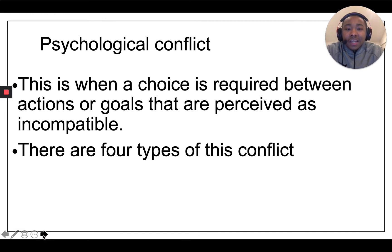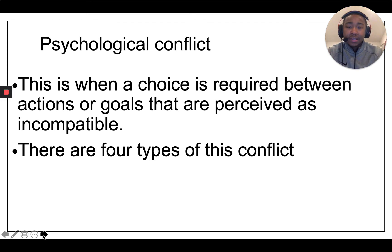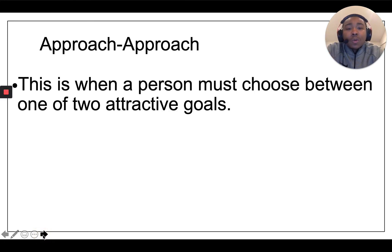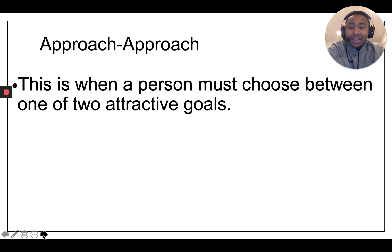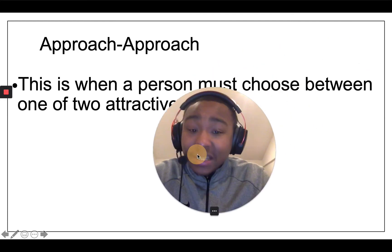We also have these psychological conflicts — I think this is really interesting. This is when there's a choice required between two different things or multiple things, and it seems like those things are incompatible. There are four types of these conflicts. The first one is called approach-approach — this is when a person has to choose between one of two attractive goals, meaning both of these are pretty good and you have to make a decision.